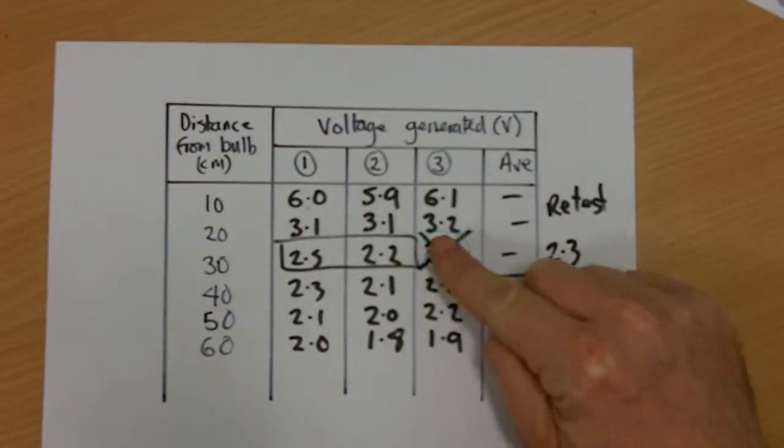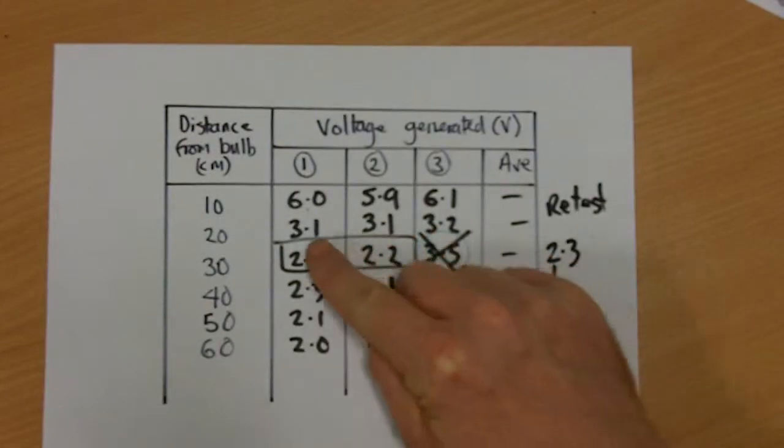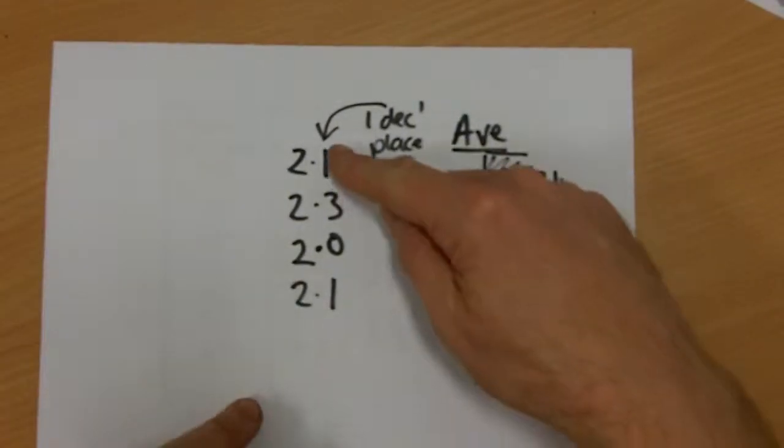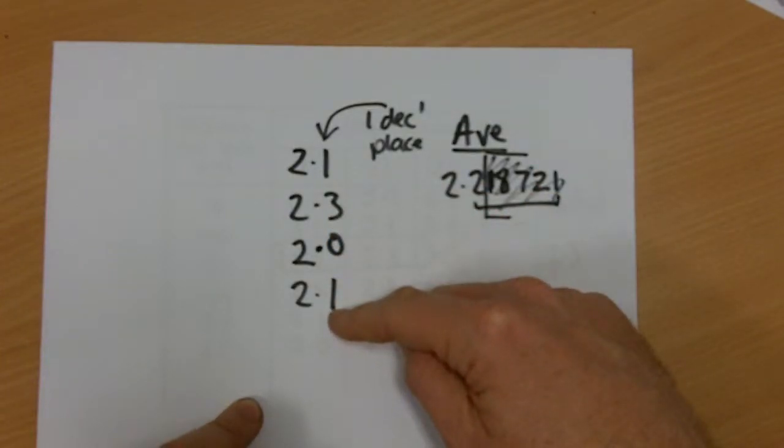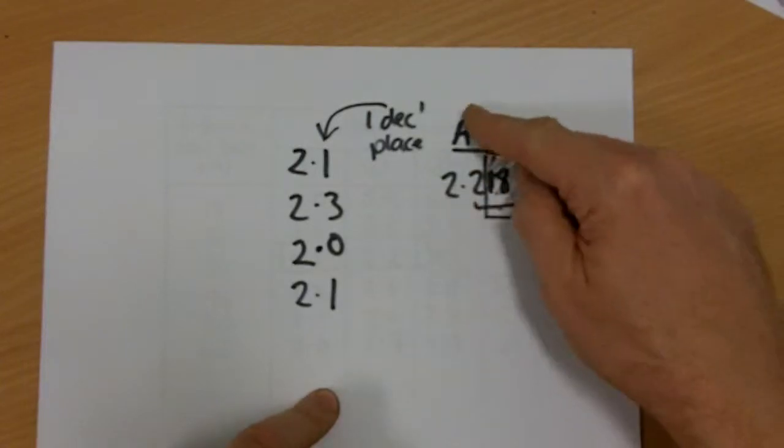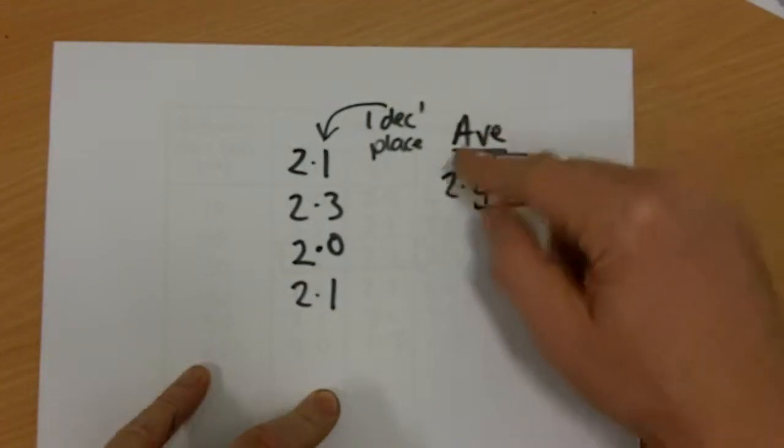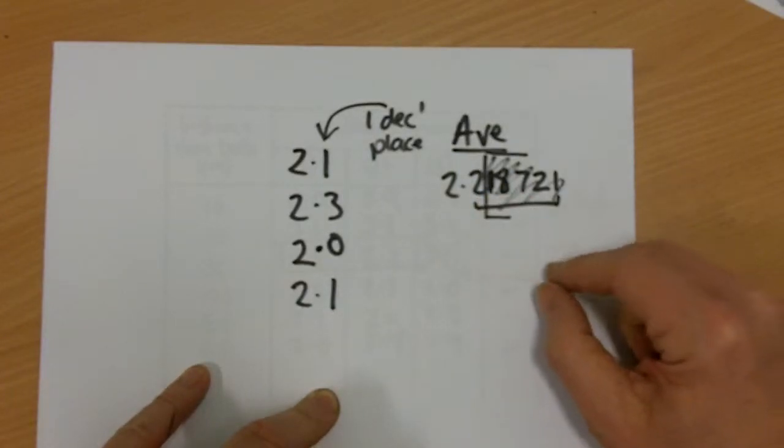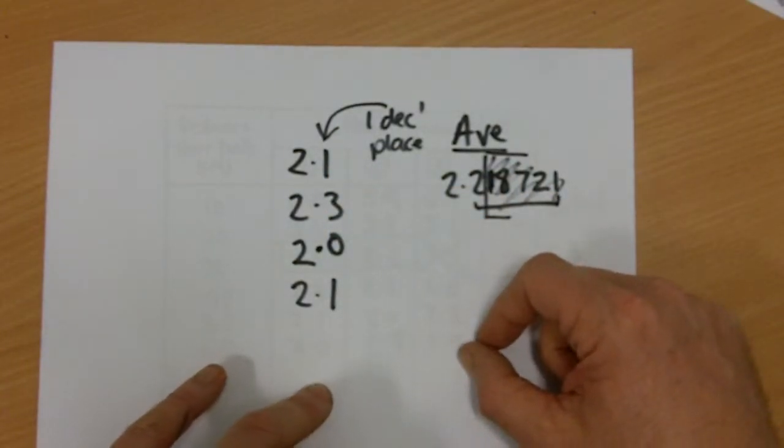Remember to look for outliers and retest if you've got time. If you haven't got time, simply ignore that result and take the average of those other two. Make sure you've got a consistent number of decimal places. Don't leave one number without a decimal place. And when you're taking your averages, be guided by the number of decimal places in your readings for what you will put in your average. Don't give eight decimal places, because they're really quite irrelevant if you've only got one decimal place of precision.